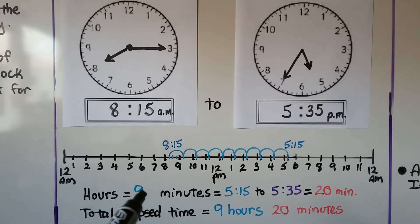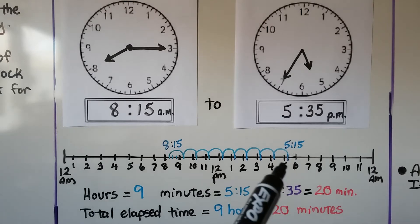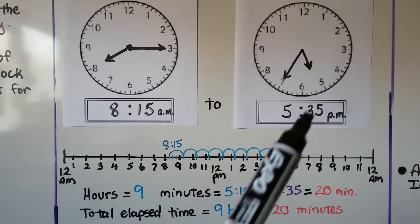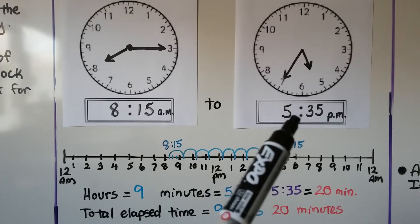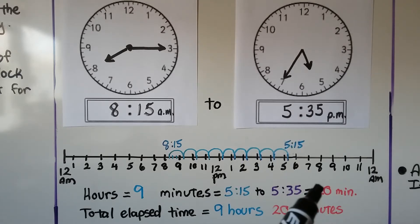So we have 9 hours. The minutes would go from 5:15 to 5:35 p.m. The difference between 15 and 35 is 20, so the elapsed time would be 9 hours and 20 minutes.